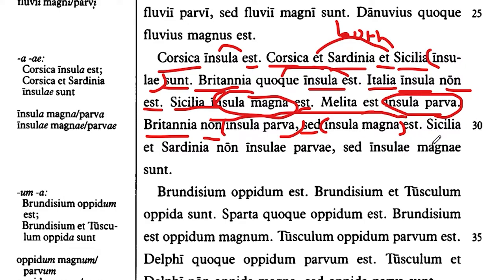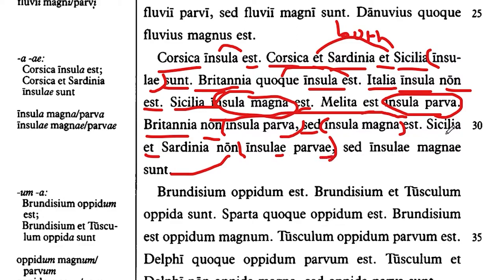Sicily and Sardinia — and again, we have this 'non' connecting all the way down to the verb at the very end of the sentence. So Sicily and Sardinia are not small islands — insulae parvae. It's insulae because we're talking about two things, Sicily and Sardinia, so these are plural.